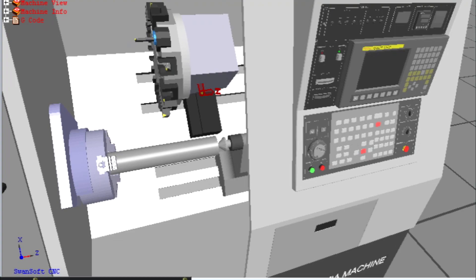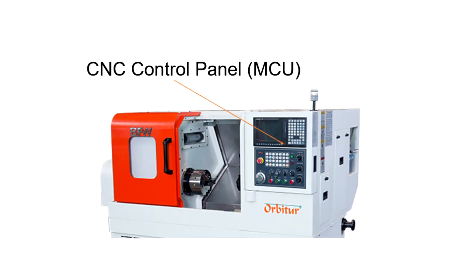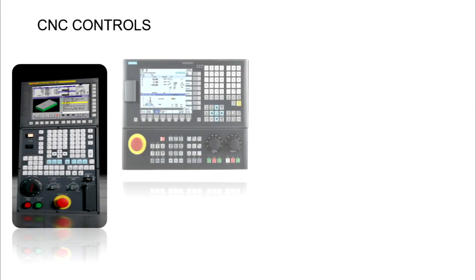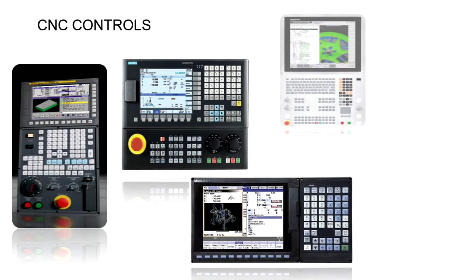The next part is the CNC control panel. This is a very important part of any CNC machine, also called the machine control unit. The control panel includes a screen and a keyboard for program editing, simulation, and other machine-related setting data. Many machine and program controls are available on the CNC control panel for operating and controlling the machine. Basically, the CNC controller works with an operating system software. Most commonly used operating systems are Fanuc, Siemens, Mitsubishi, Heidenhain, and Haas.